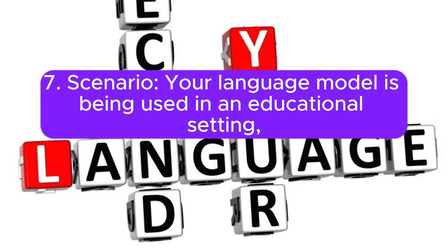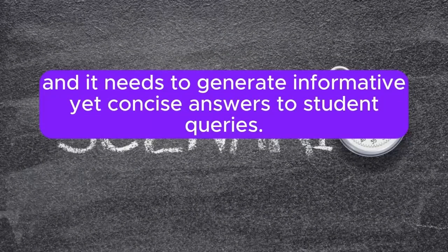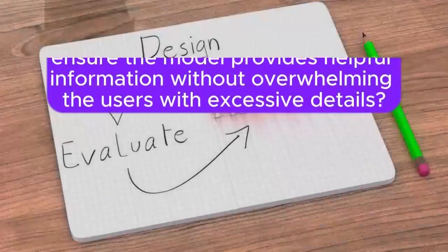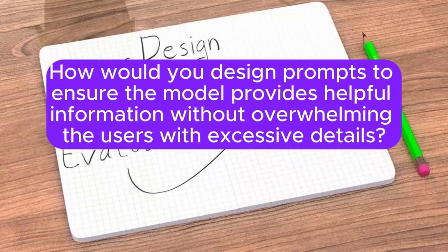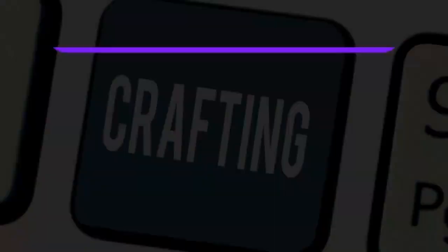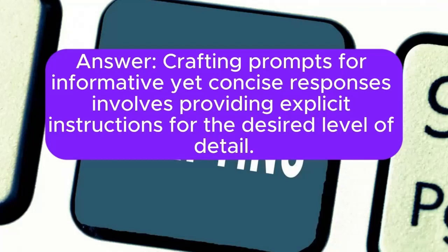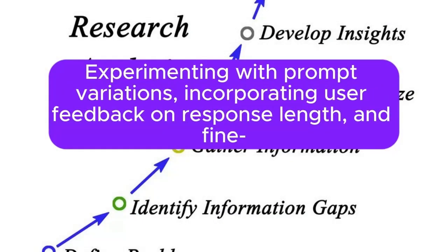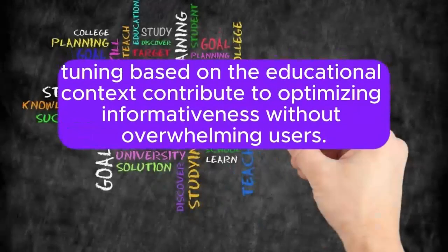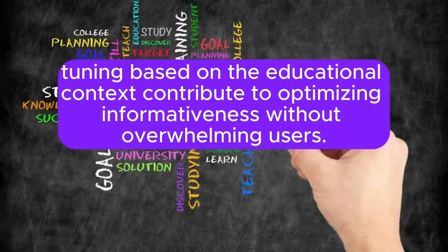Scenario 7: Your language model is being used in an educational setting, and it needs to generate informative yet concise answers to student queries. How would you design prompts to ensure the model provides helpful information without overwhelming users with excessive details? Answer: Crafting prompts for informative yet concise responses involves providing explicit instructions for the desired level of detail. Experimenting with prompt variations, incorporating user feedback on response length, and fine-tuning based on the educational context contribute to optimizing informativeness without overwhelming users.